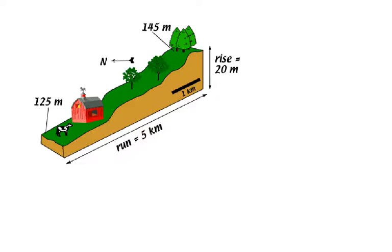Here's a hill. And you can see that there is a vertical rise here of 20 meters, and there's a horizontal rise here of 5 kilometers.